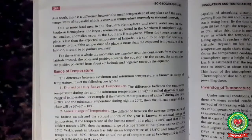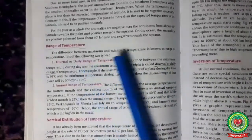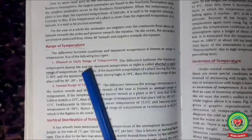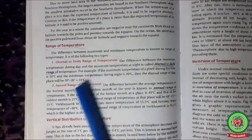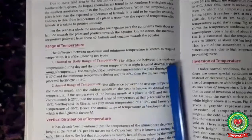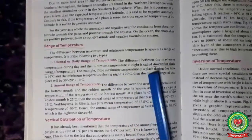Now open your book at page 264. The first topic we will discuss today is range of temperature: the difference between maximum temperature and minimum temperature of a place is known as range of temperature. It is of two types: diurnal or daily range of temperature, and annual range of temperature. The difference between the maximum temperature of the day and the minimum temperature at night is called diurnal or daily range of temperature.